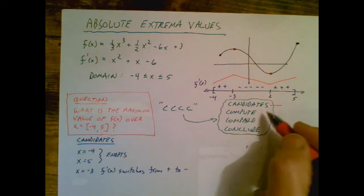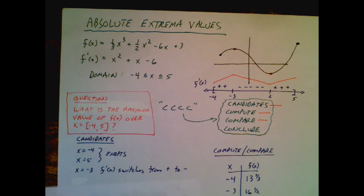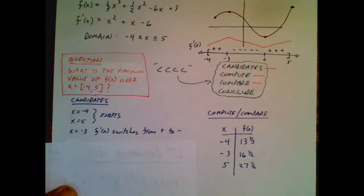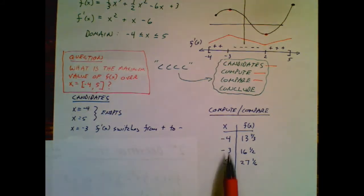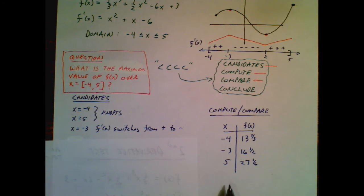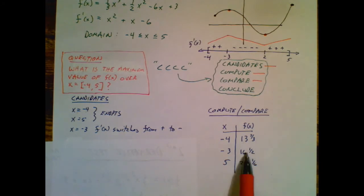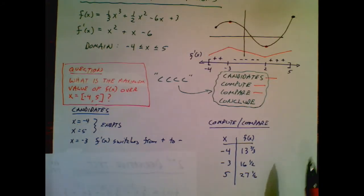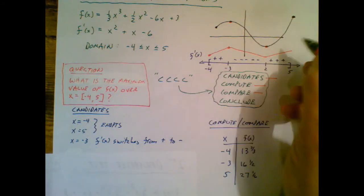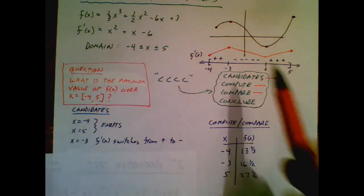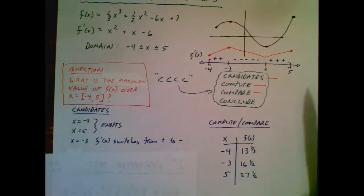All right, we have our candidates. Now, the compute and compare, we're going to do all at once. And here's what's going on with that. I take my candidates. These are the x values that the absolute maximum value might occur. And I plug them into the original function because I want to know their y values. In other words, I would really like to know what's that y value, what's that y value, and what's that y value. Of those three y values, one of them is going to be the biggest or the absolute maximum.